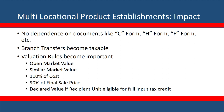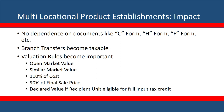The valuation rules give a priority order: first, open market value; if unavailable, similar market value of like goods from third-party transactions; if both unavailable, cost plus method at 110% of cost. Alternatively, you can start with the resale price and take 90% of the final price as the branch transfer value. If the receiving branch is entitled to full credit, the invoice value you plot will be acceptable.